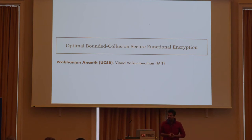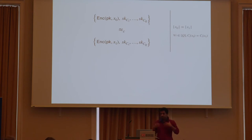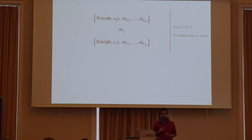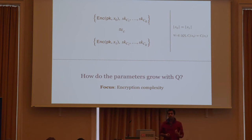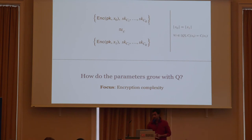I'm going to talk about an optimal bounded collision secure FE scheme, in joint work with Vinod. Recall that I defined the security of the FE scheme where the adversary can make Q functional queries. A natural question to ask is how do the parameters of the FE scheme grow with Q? In particular, I'm going to focus on the encryption complexity of the FE scheme in terms of Q. As we will see, this is not an artificial question and it has some important implications in cryptography.